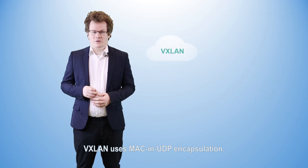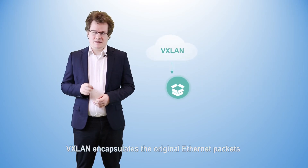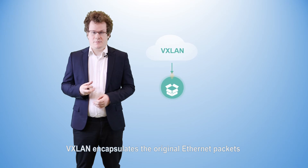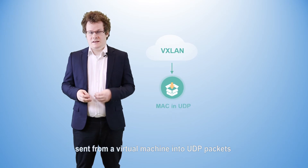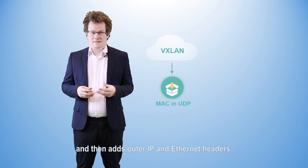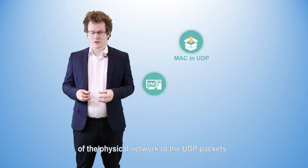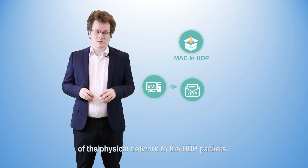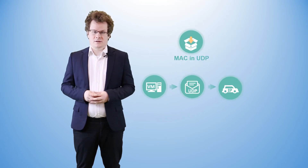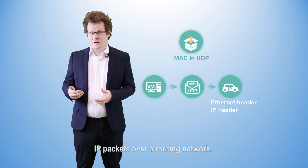VXLAN uses MAC and UDP encapsulation. It encapsulates the original Ethernet packets sent from a virtual machine into UDP packets, and then adds outer IP and Ethernet headers of the physical network to the UDP packets. The encapsulated packets can be forwarded as IP packets over a routing network.